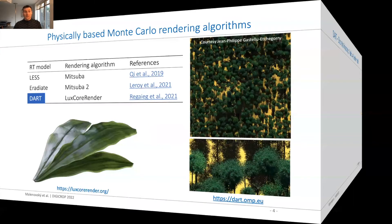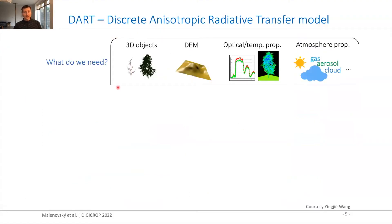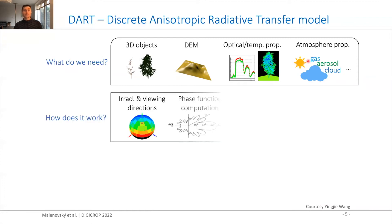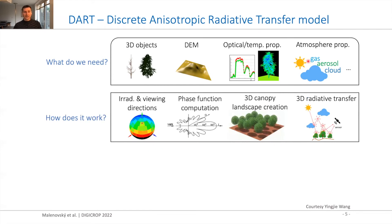How does DART work? First we need a 3D object of our plant of interest, tree of interest, or any other object. We can also use a digital elevation model beneath that 3D object. We require optical and temperature properties of any single surface within the simulated scene, and if we want to involve atmosphere, we need information on gases, aerosol, water vapor, and possibly cloud occurrences. We first set up in DART the irradiation direction as well as viewing directions. Then DART will compute from optical properties and viewing angles the BRDF function for any surface within the 3D scene which we want to simulate.